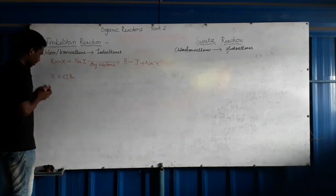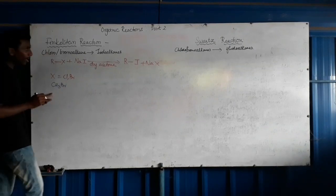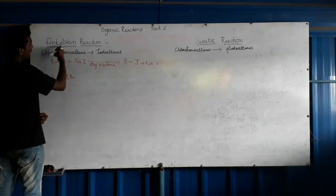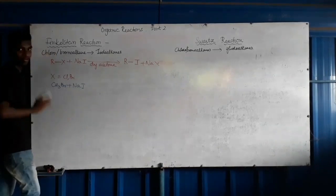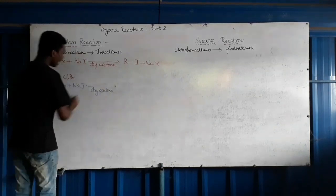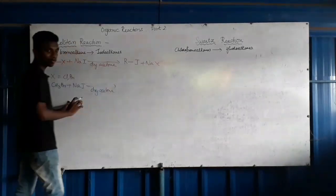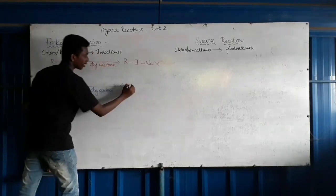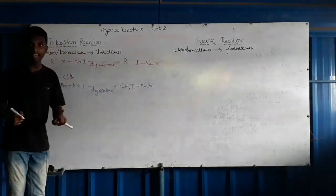Let's look at an example: CH3Br (methyl bromide) treated with NaI in dry acetone gives CH3I (methyl iodide) and sodium bromide as a byproduct. Similarly, methyl chloride with NaI gives methyl iodide. That is the Finkelstein Reaction.